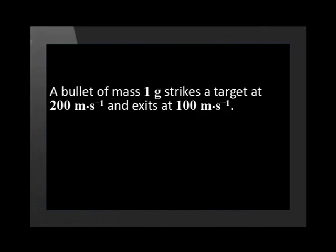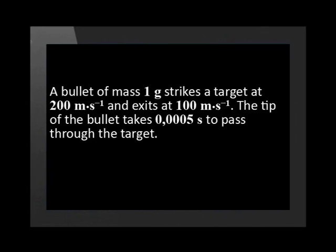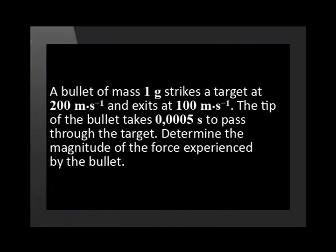Now let's look at an example where an object slows down. A bullet of mass 1 gram strikes a target at 200 meters per second and exits at 100 meters per second. The tip of the bullet takes 0.0005 seconds to pass through the target. Determine the magnitude of the force experienced by the bullet. Let's see what the question tells us.